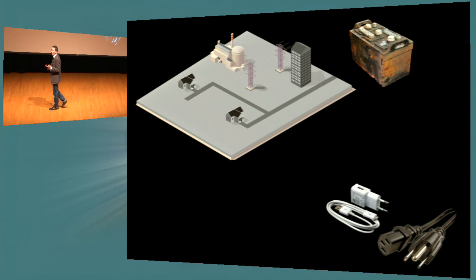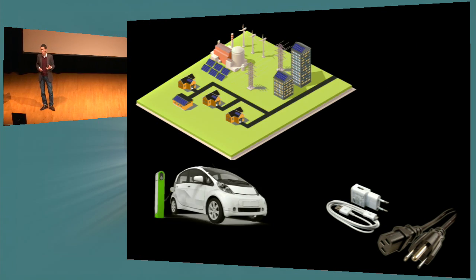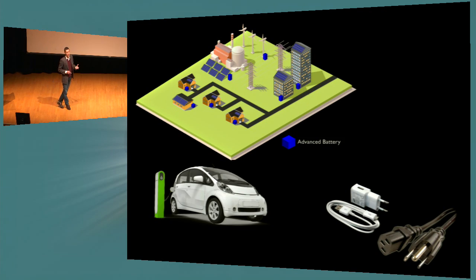Here I'm showing the old energy system, the old energy grid, and it served us very well for half a century. But this is what the new one looks like. More renewables, more power consumption, more electric vehicles on the road. And we're going to need advanced batteries to make that happen. It's happening, but we really need advanced batteries to keep going forward.